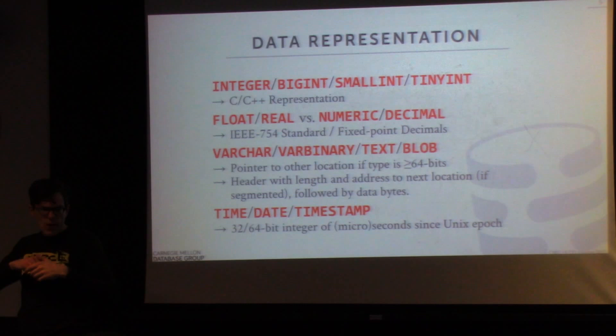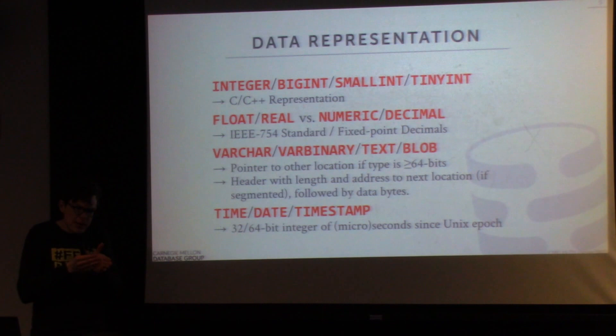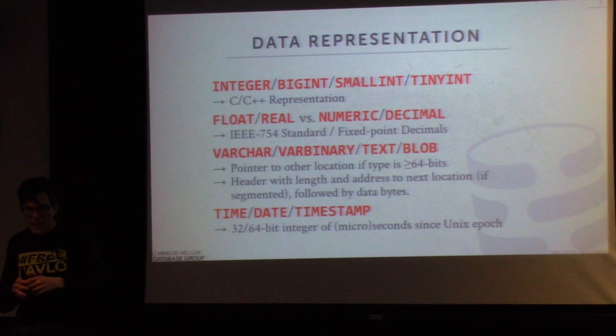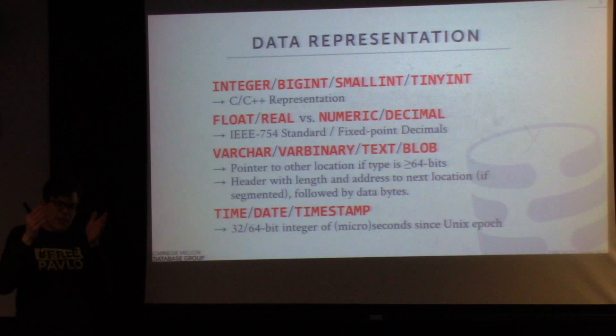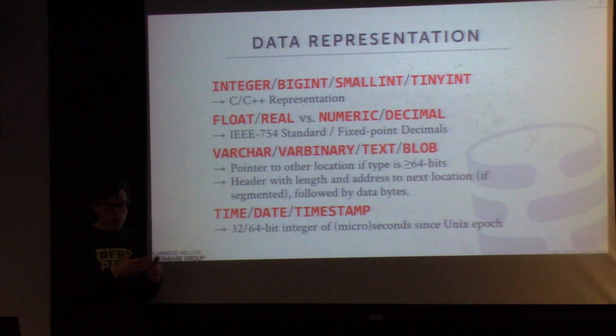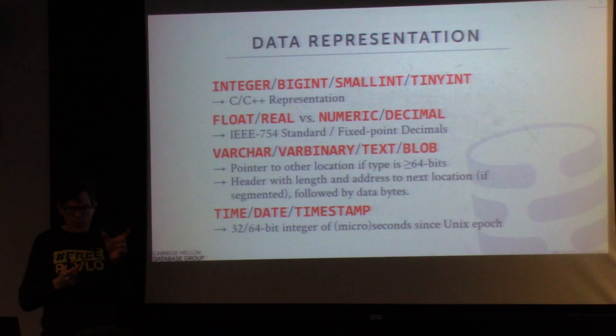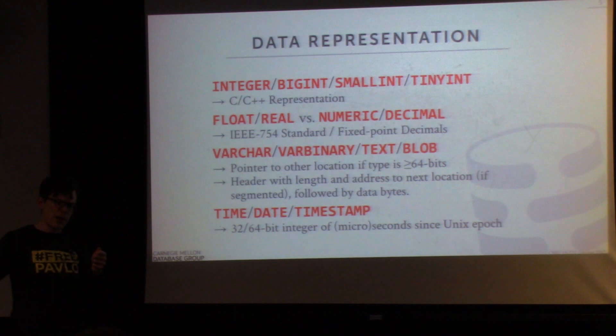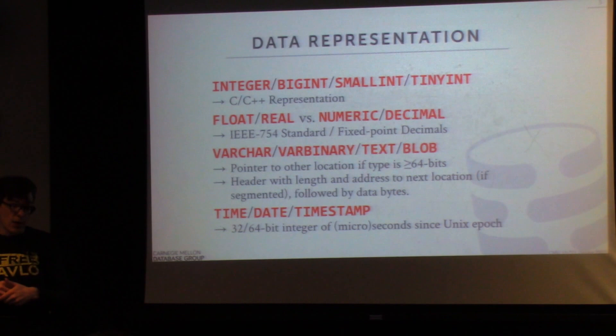For variable-length values — varchar, varbinary, text, blob — if the value is less than 64 bits, we can store it directly inline in our fixed-length block. If it's larger, we have a pointer to the variable-length pool, where at that location there's a header with the length of the blob followed by all the data bytes. If the blob is really big and exceeds a slot in the pool, you can chain these together with pointers. Typically you don't want to store really large items like a 10-gigabyte file in a database, but you could.